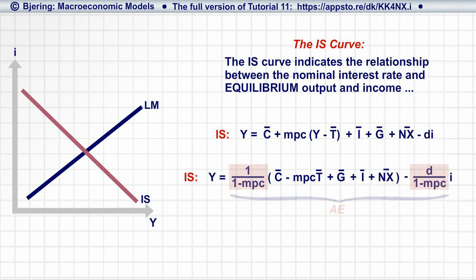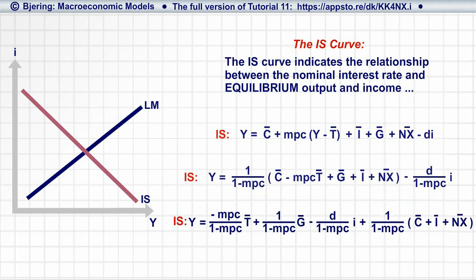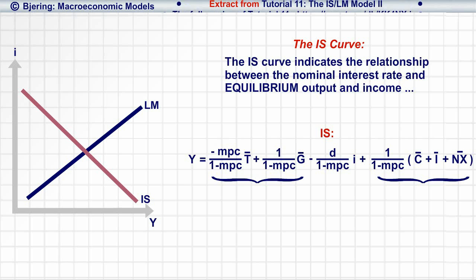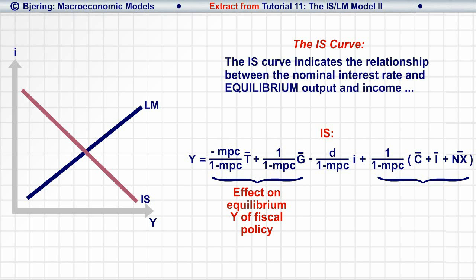Rearranging, we get... Here, these two groups of terms include the exogenous variables of the equation. The first group of terms indicate the effect on equilibrium income and output of fiscal policy. The second group of terms include other factors, like the exogenous term of the consumption function, exogenous investment, and exogenous net exports.